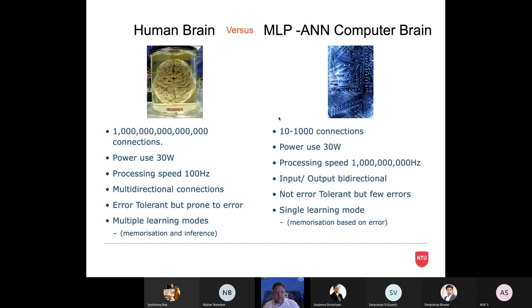So the human mind or human brain has around about 10 to the 12 connections. Our neural networks have 10 to 1000 connections. We use around 30 watts of power and the computer chip on its own uses about 30 watts of power. We have a processing speed in the brain of 100 hertz, whereas a computer has a processing speed of many gigahertz. The human brain has multi-directional connections and so it can infer things through those connections. Computers tend to be an input relating to an output, but as you'll see in a while, we're trying to develop some approaches which utilize those multi-directional connections in networks.